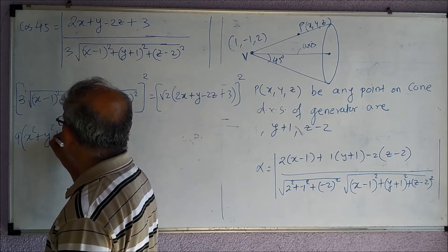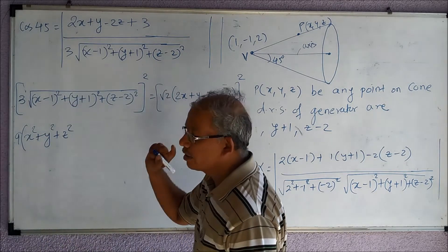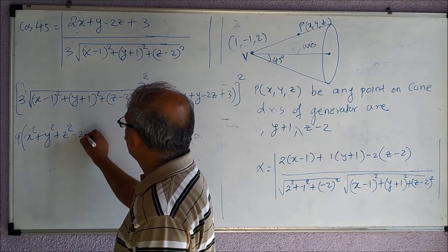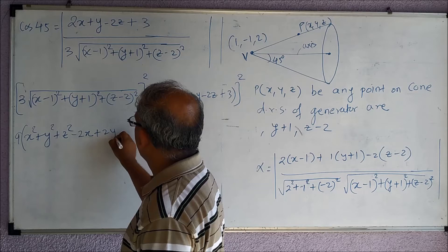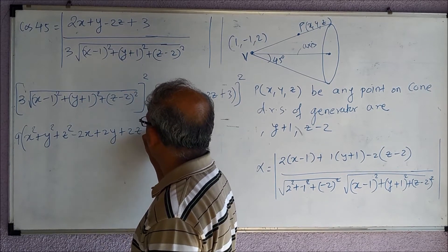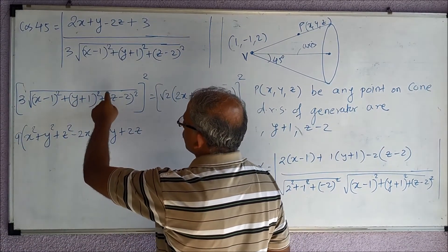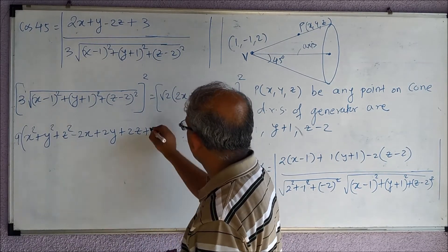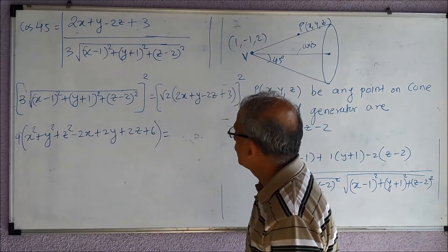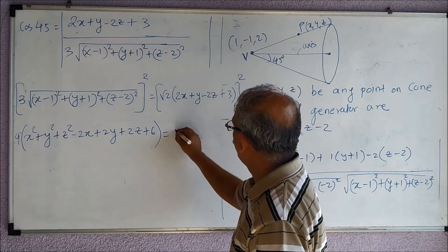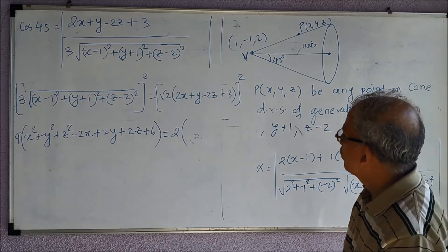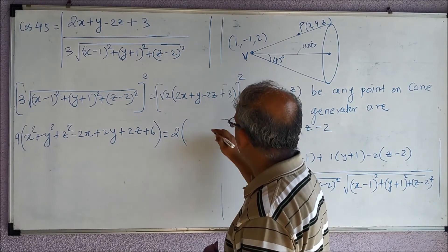And now we will simplify. So this will be 9 times (x² + y² + z²), so I am opening all these brackets and then squares, minus 2x + 2y + 2z, then this is 1 + 1 + 4, plus 6, is equal to 2 times...